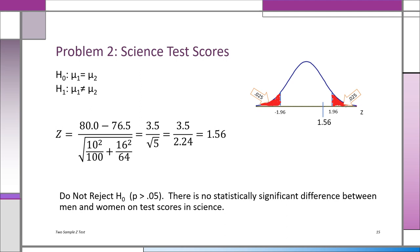We convert the sample evidence to a z-score: (80 − 76.5) divided by the square root of (10² / 100 + 16² / 64) = 3.5 / √5 = 3.5 / 2.24 = 1.56. That's in the acceptance region — not enough evidence to reject H0. The 3.5-point difference could very well be sampling error. Conclusion in simple English: no statistically significant difference between men and women on the science test.